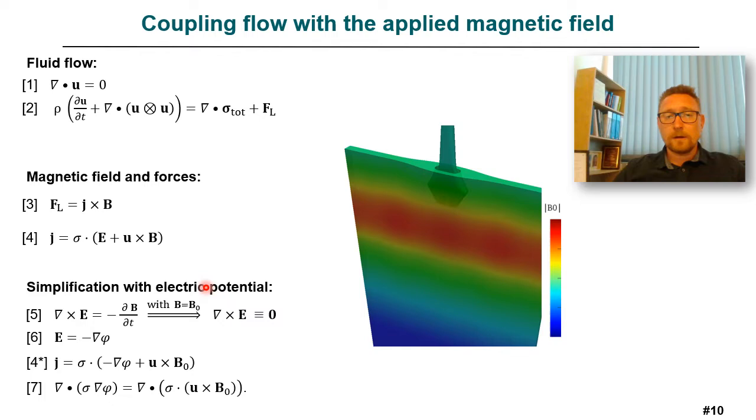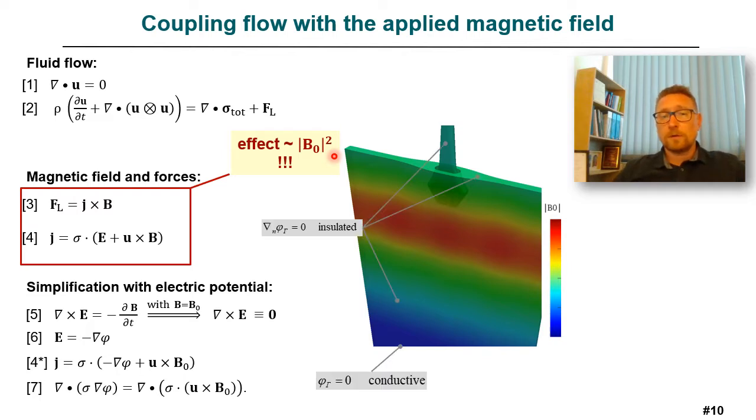It assumes that the total magnetic field equals the applied one, and the electric field can be substituted by the gradient of the electric potential. Next, the corresponding Poisson equation is constructed for the electric potential using conservation of the induced electric current. An important effect is that by varying the magnetic field we get a squared influence on the Lorentz force. Finally, the numerical model is closed by corresponding boundary conditions for the electric potential.